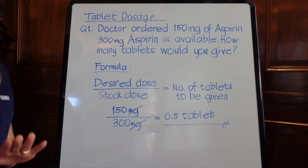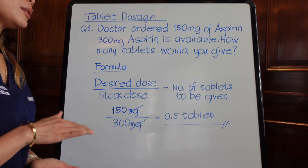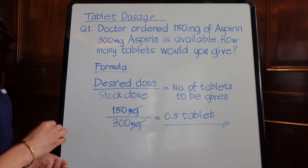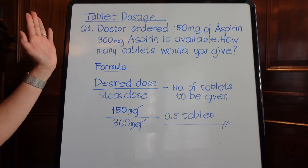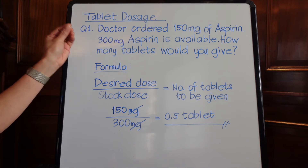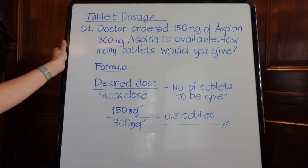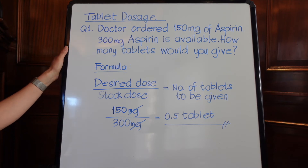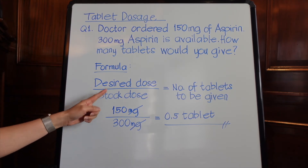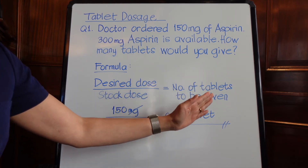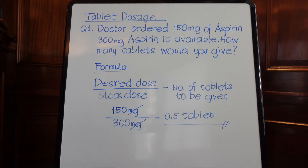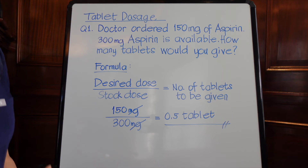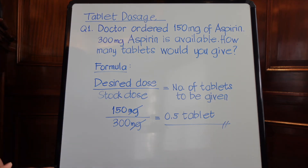The third step is to choose the right formula. Ask yourself: is this a tablet dosage, a mixture or solution, or an intravenous medication? In this question it's asking for tablets to give, so the correct formula is: desired dose over stock dose equals the number of tablets to be given. Remember, the formula used determines the correct answer, so memorizing your formulas is essential.